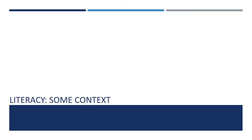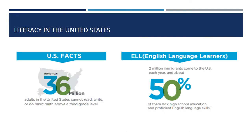Before we begin, let's look at some general context about literacy, both in the United States and within the English Language and Literacy program at LearningWorks. According to ProLiteracy.org, in the United States, there are more than 36 million adults who cannot read, write, or do basic math above a third grade level. As mentioned in a previous video, the origins of the English Language and Literacy program were in helping many adults who were native-born English speakers improve their literacy skills.